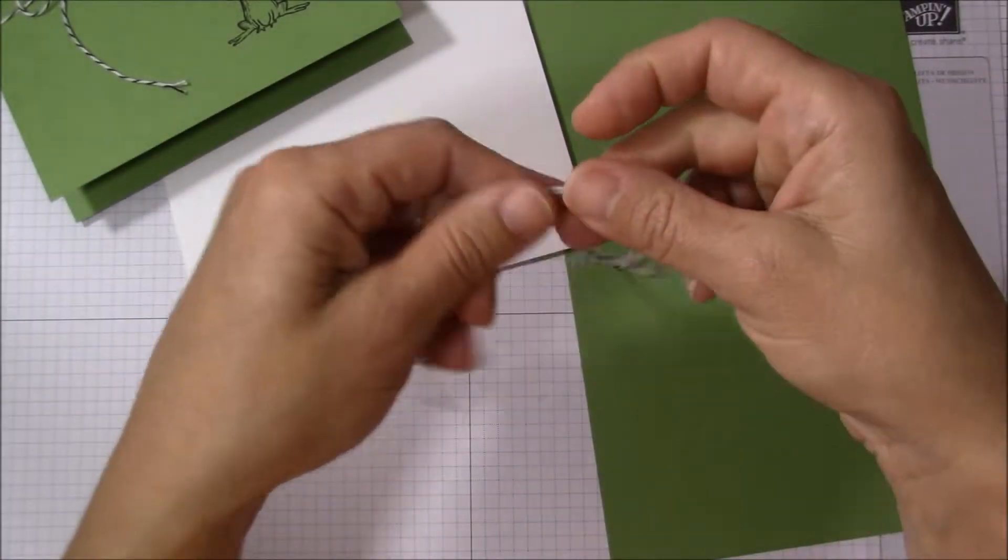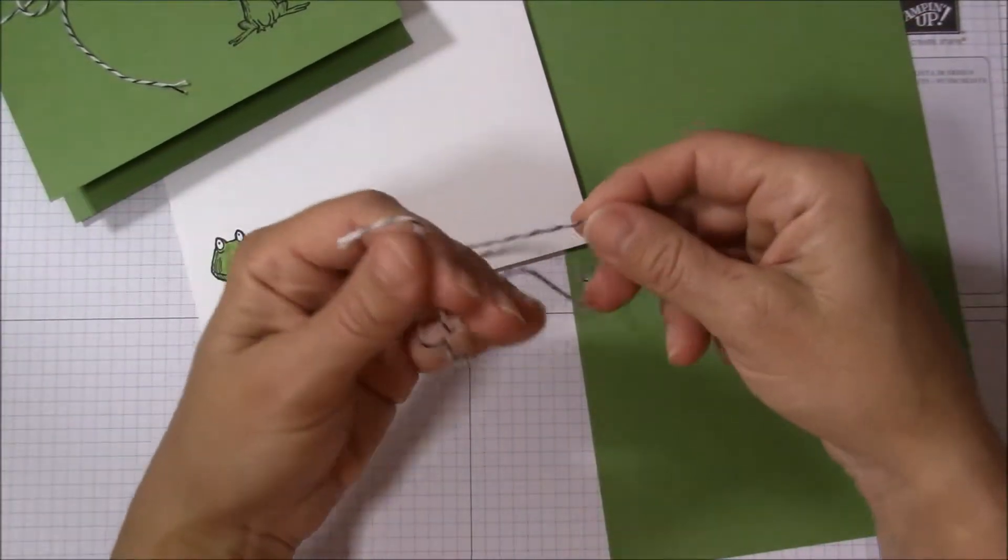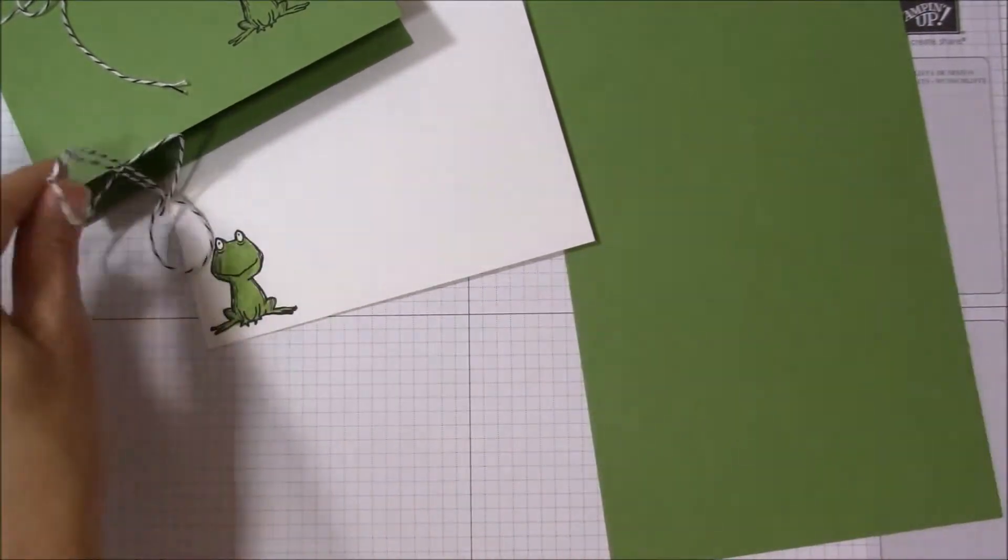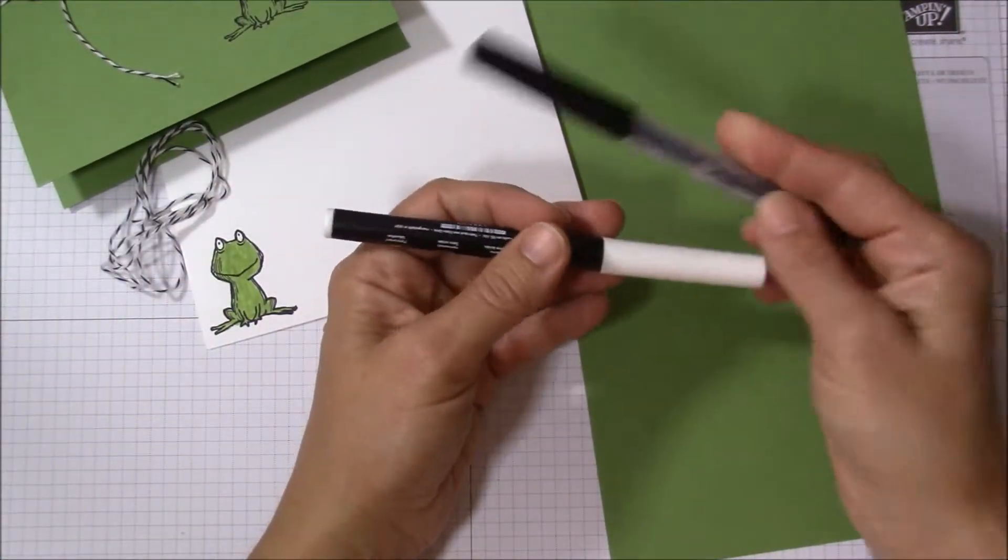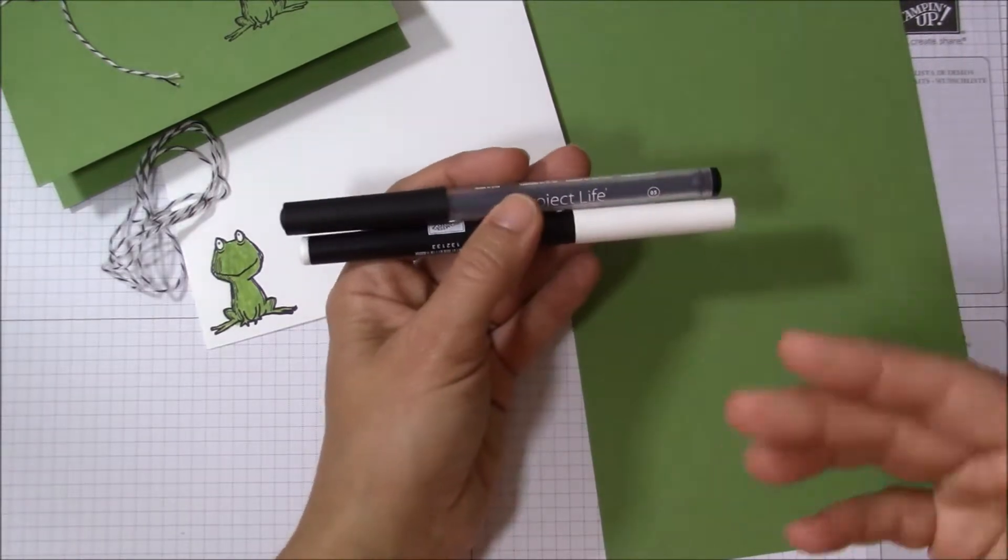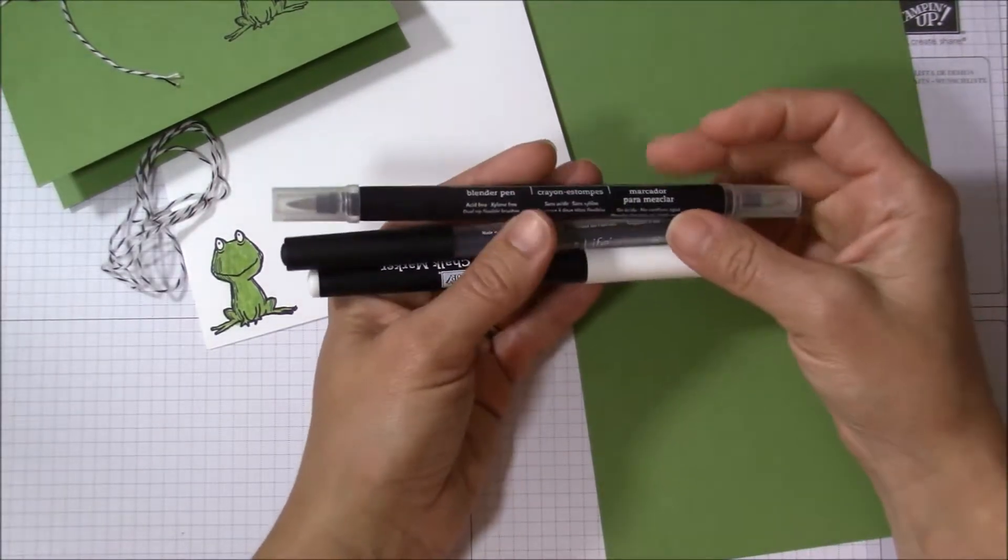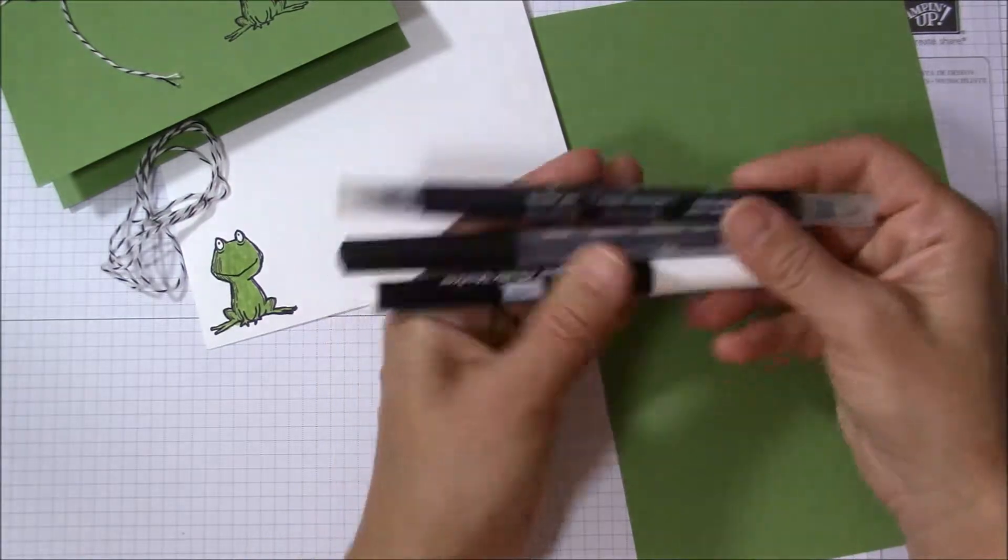You'll need a chalk marker, a project life pen or just a black marker from the Stampin' Up markers, and then a blender pen to color in the frog on the envelope.